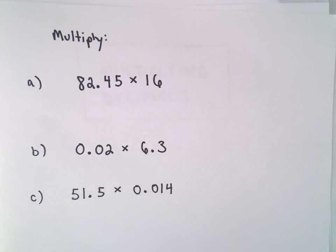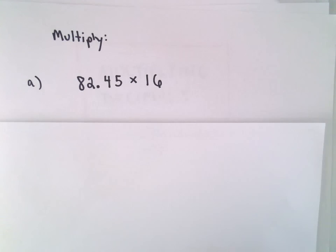Alright, in this video I'm going to look at some examples involving multiplication of decimals. So in part A here we've got 82.45 times 16.